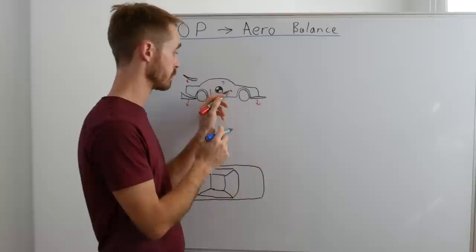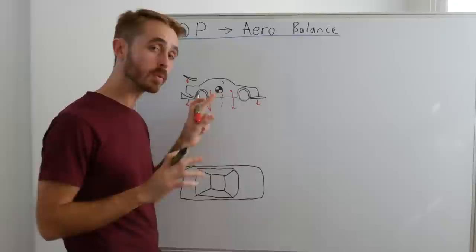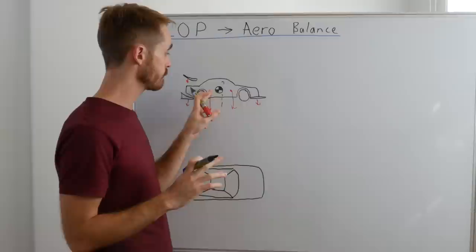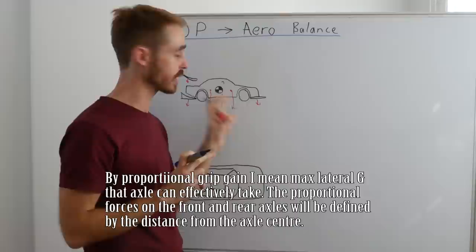The important thing to note here is that that's just showing the bias of downforce front and rear axles. What we really want to compare it to is where our center of gravity is, because that will be our proportional grip gain. If the center of pressure is behind the center of gravity, that means we proportionately have more aero grip on the rear axles. If we move the center of pressure to in front of the center of gravity, we proportionately have more aero grip on the front axles.